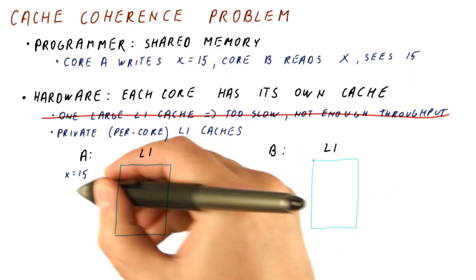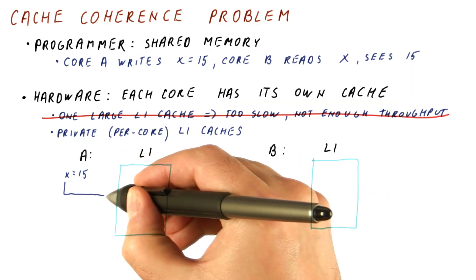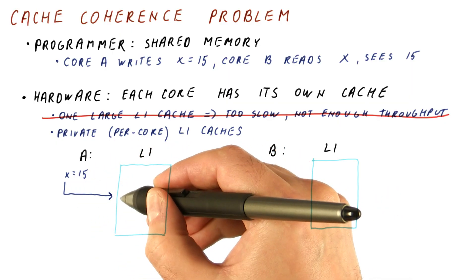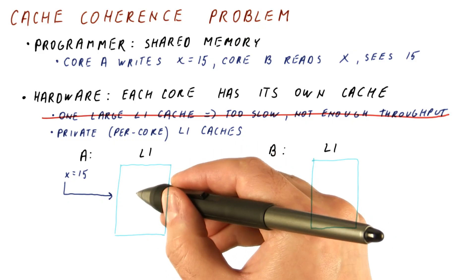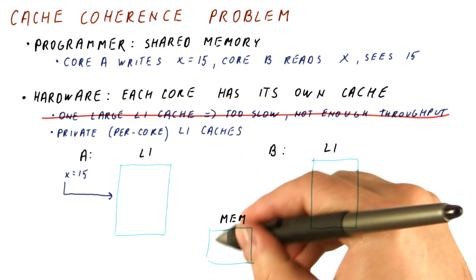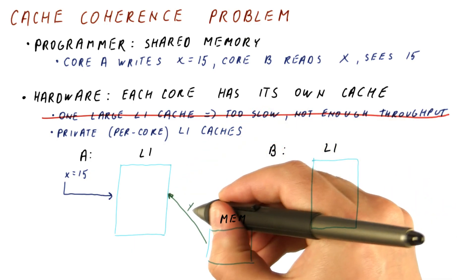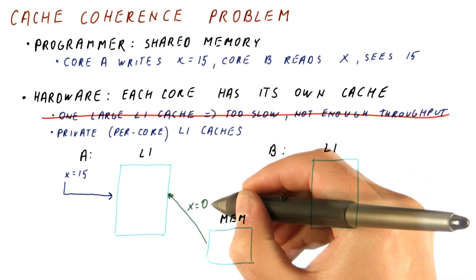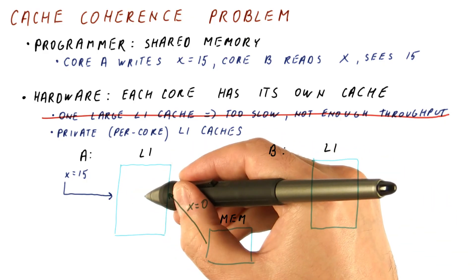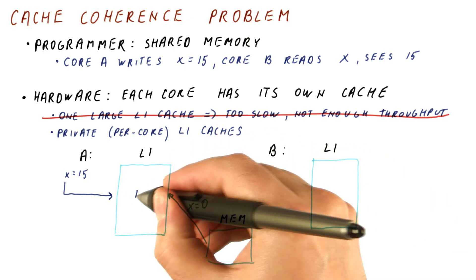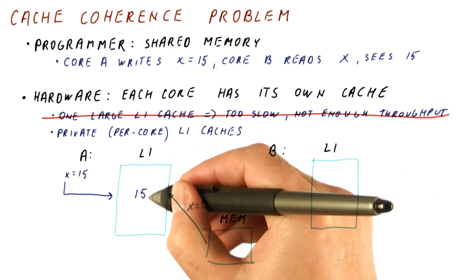Suppose this is a cache miss. We use the address of x to index into our cache, check the tag whether it corresponds to x. And then if this is a cache miss, we go to our main memory and fetch the whole block into our cache. Let's say that in this block, x is 0. Once we fetch it into our cache, we write our 15 here. So now we have a 15 in our cache here.